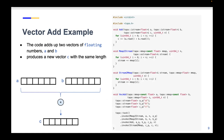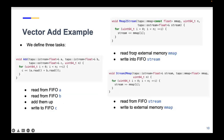Here is a very simple TAPA program—a vector add. What it does is read two vectors from external memory, add them up, and write the result back. This is a classic FPGA hardware example, just a few tens of lines of code. I'll introduce each part of it.